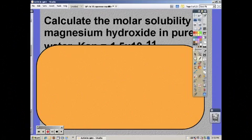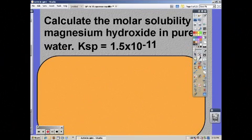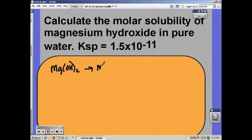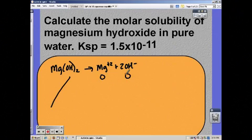So again, they gave us the Ksp, we're looking for the molar solubility. So write your dissociation equation, which means we have 1 magnesium and 2 hydroxides. We didn't start with any, so we have plus x plus 2x.